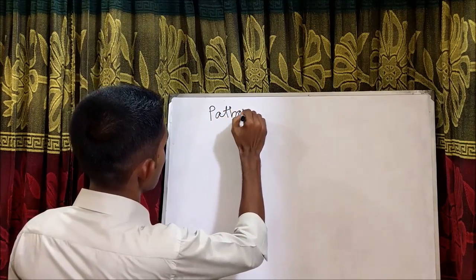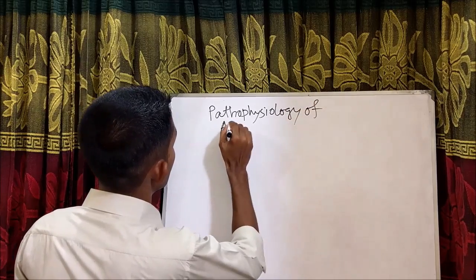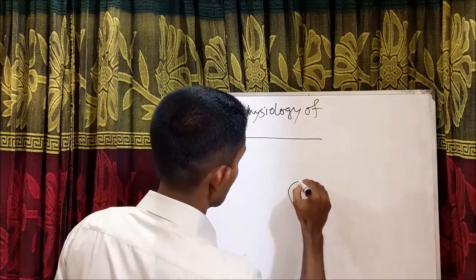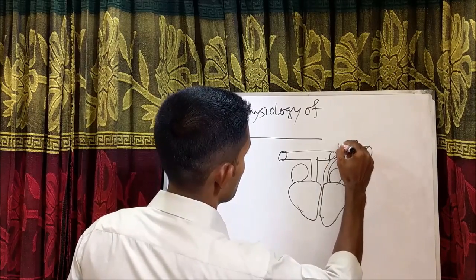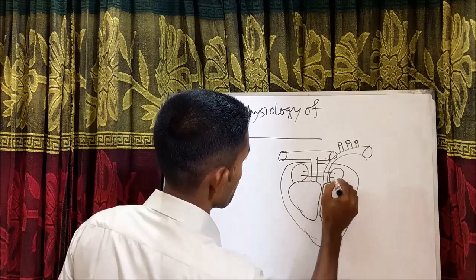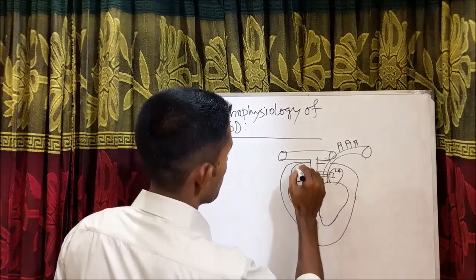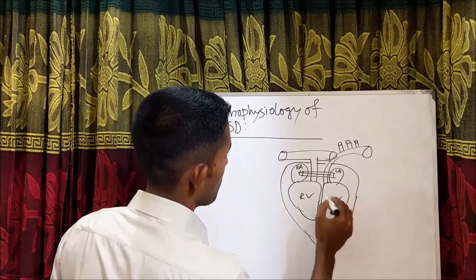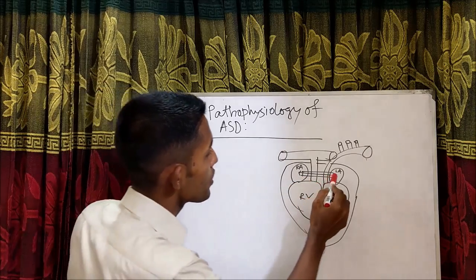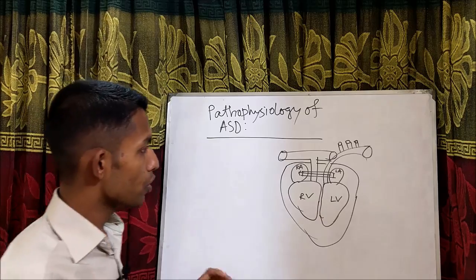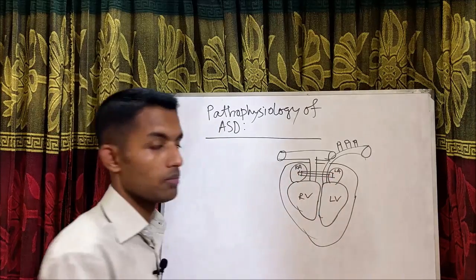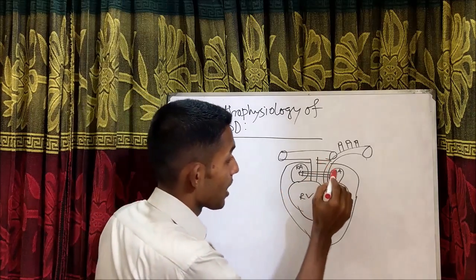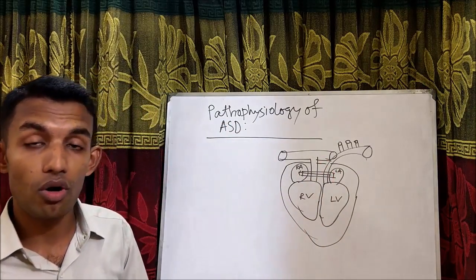Now the pathophysiology of ASD. In ASD there is a communication between left atrium and right atrium. We know that in the left atrium there is more pressure than the right atrium, so there is a pressure gradient between them. Blood follows that gradient, so blood flows from left atrium to right atrium — this is called a shunt.